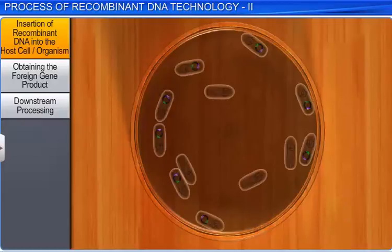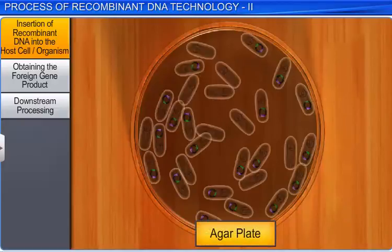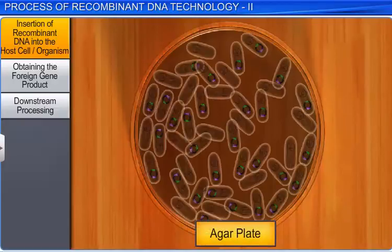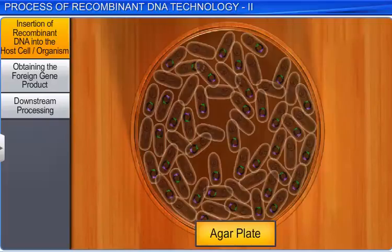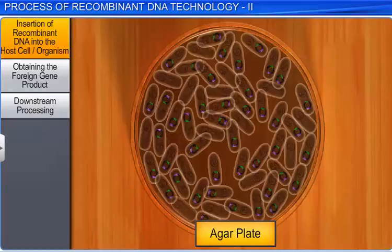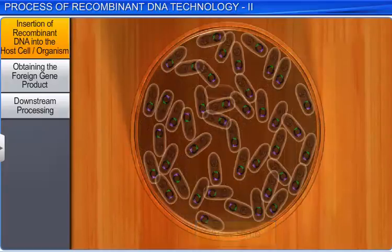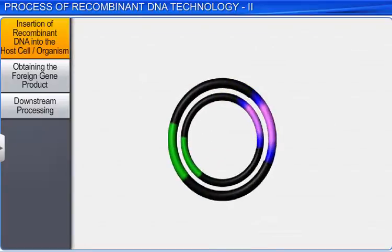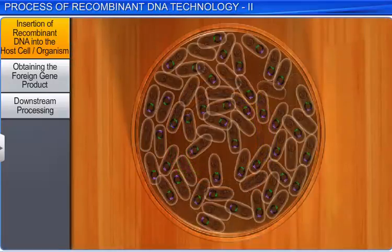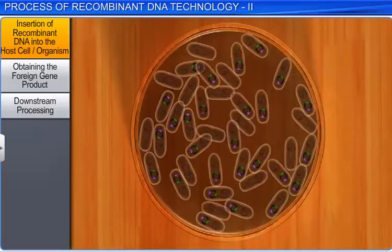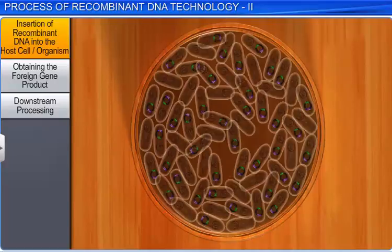Thereafter, when the host cells are spread on agar plates containing ampicillin, only the transformants will grow. On the other hand, non-transformant recipient cells will die. In this case, the ampicillin-resistant gene acts as a selectable marker, since it identifies and eliminates non-transformants and permits the growth of transformants.